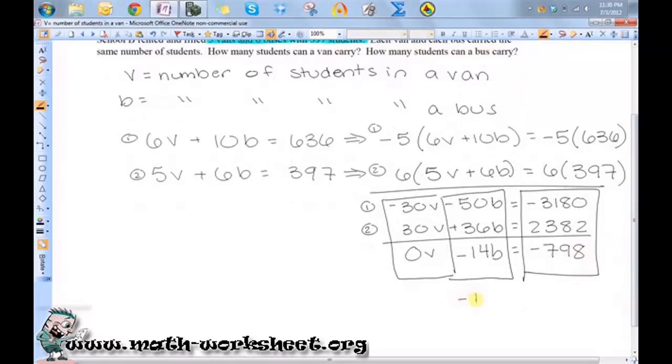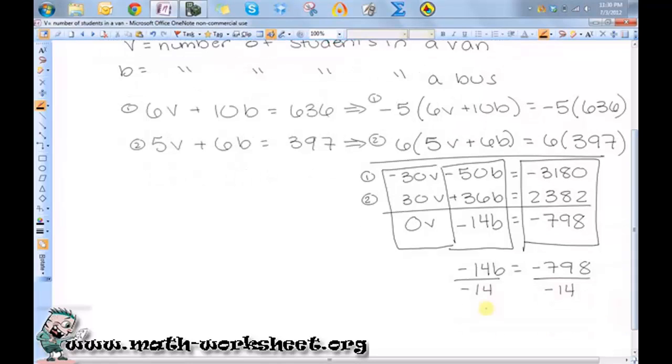And then -50b + 36b equals -14b equals -798. Okay, so what I have is the equation -14b = -798. So I have an equation with only one variable that I can solve just by dividing both sides by negative 14.